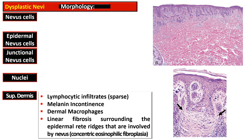Other features present in the superficial dermis include sparse lymphocytic infiltrate. As a result of dead melanocytes, melanin is released into the environment — termed melanin incontinence — and macrophages come into this area as dermal melanocrophages. There is also a band of linear fibrosis surrounding the epidermal rete ridges involved by nevus cells, termed concentric eosinophilic fibroplasia, where adjoining rete ridges form a band-like connective tissue.